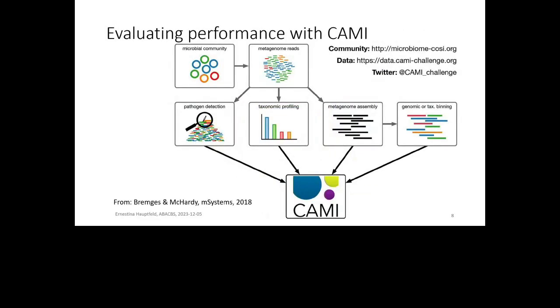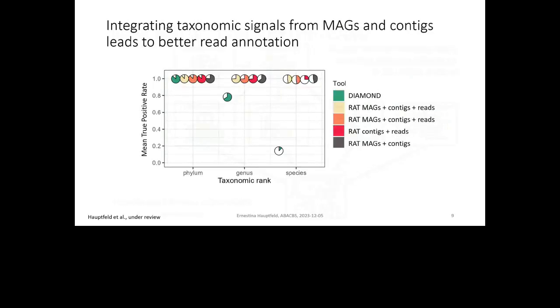So how well does this work? Well, for this, there are some simulated datasets available made by the people from the CAMI Challenge. So there, they take genomes from the databases that are known to be present in certain environments, and then they simulate a metagenome from this environment. And so then we have a metagenome where we know what we are actually supposed to find in the data. So we know which organisms are supposed to be there, and how much of them are supposed to be there. And so I tested how integrating the information would affect the read by read annotation.